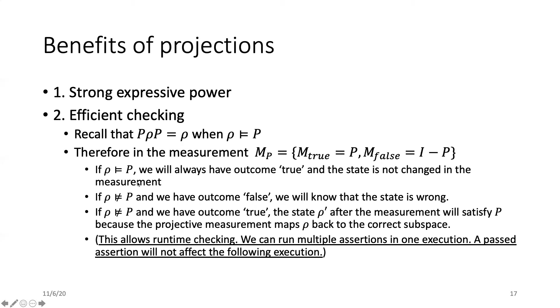Whereas the state ρ is not in P, which means this predicate is not satisfied, it's possible that we have outcome false and we know that the state is wrong. In the third case, it is still possible that we have a wrong state that is not in P, but we still have outcome true because it is a probabilistic measurement. And we can see that the state ρ prime after the measurement will satisfy P because actually the projective measurement maps the ρ back to the correct subspace specified by P. This actually allows runtime checking because we can run multiple assertions in one execution. A passed assertion will not affect the following execution even if the input state of this assertion is not correct.